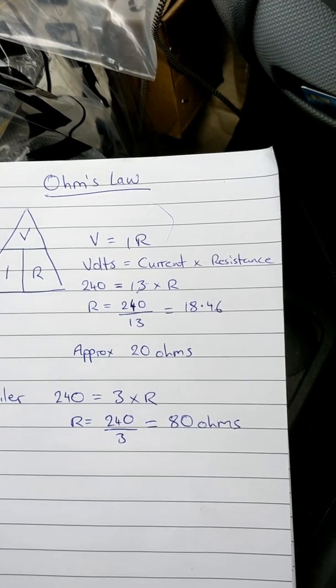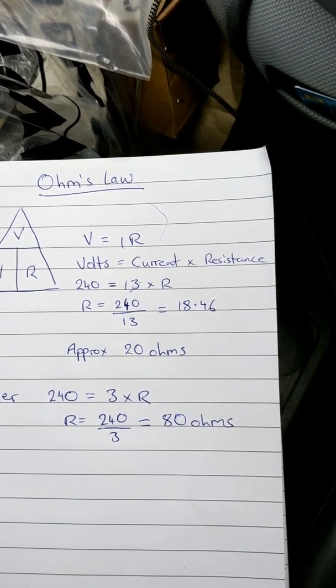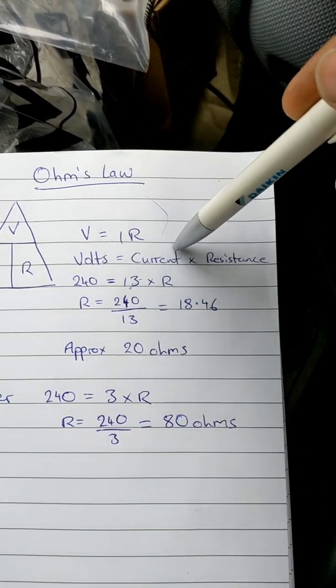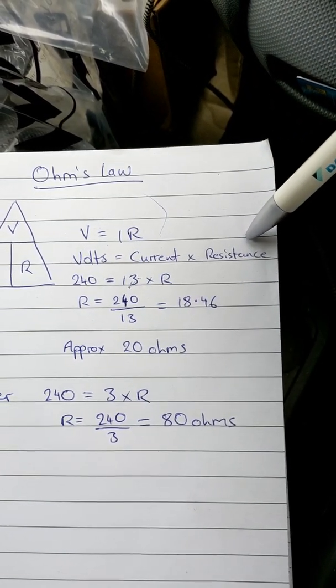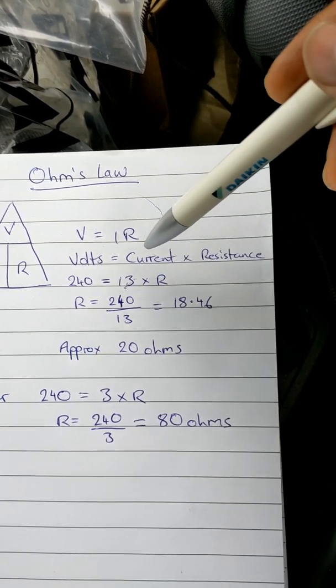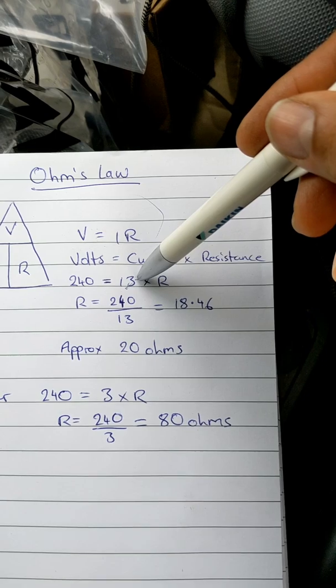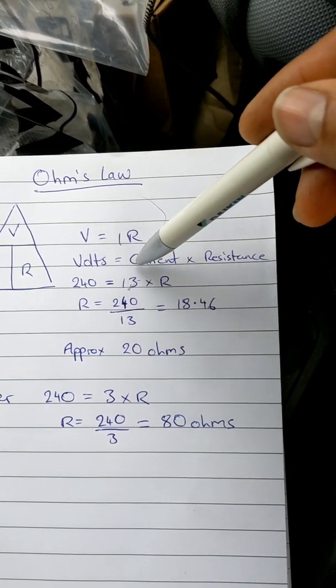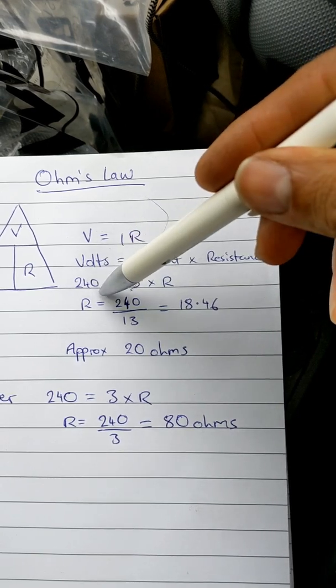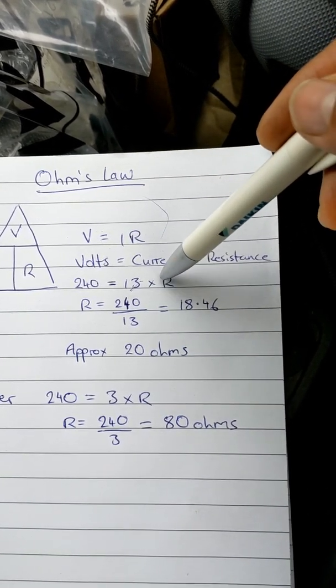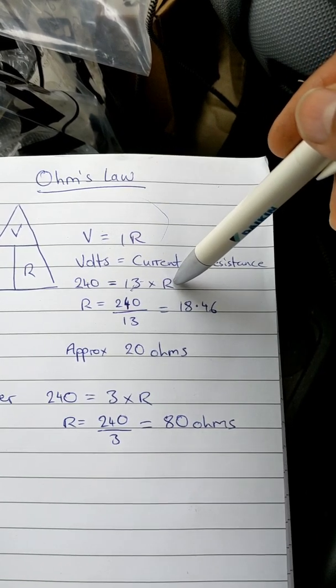What you're testing across is your live and neutral terminals, and your general formula, like I said, is volts equals current times resistance. Now generally, a lot of the appliances that we work on a day-to-day basis will be protected by a 13 amp fuse. In the UK, we're working off a 240 volt supply, so our general formula is going to be 240 equals 13 amps times the resistance, and that's the resistance value that we're looking to work out.